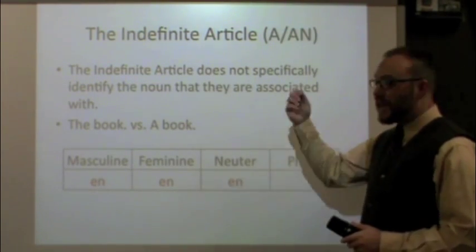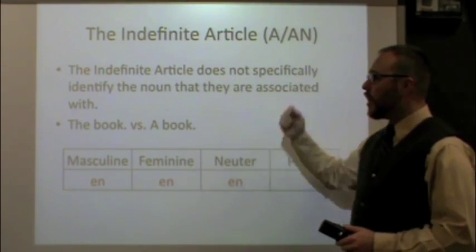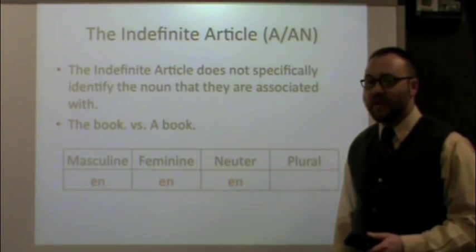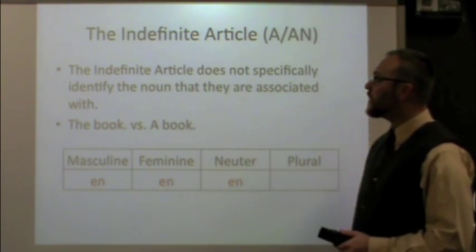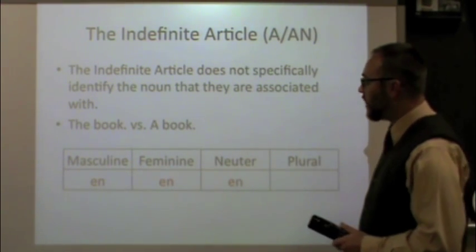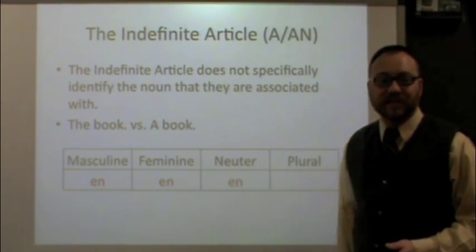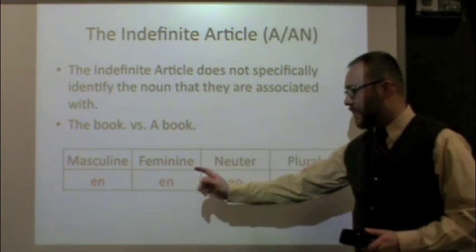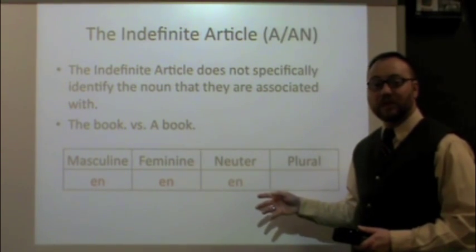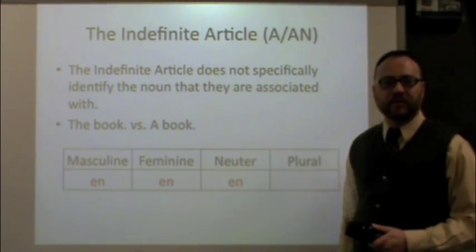The indefinite articles in the accusative case — the 'a' or 'an' — are also exactly the same as the nominative case. So again, if you've memorized those, you're ahead of the game. Remember that the indefinite article does not specifically identify the noun it's associated with — it's the difference between 'the book' versus 'a book.' For masculine, feminine, and neuter, they are all 'n,' 'en,' 'n.' Nothing for the plural, because you can't have a plural indefinite article.